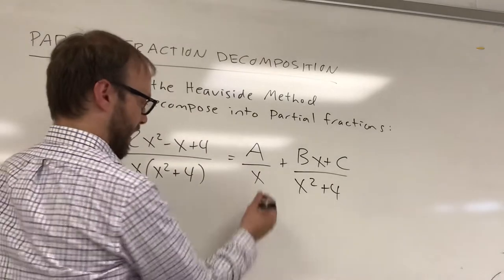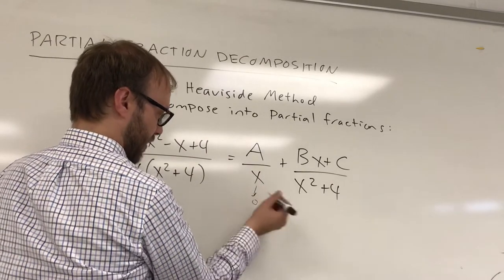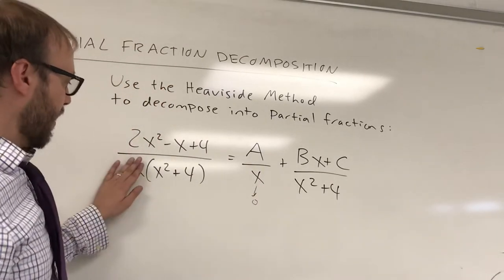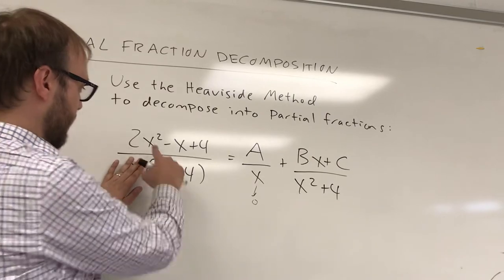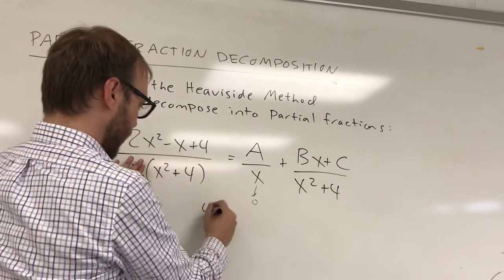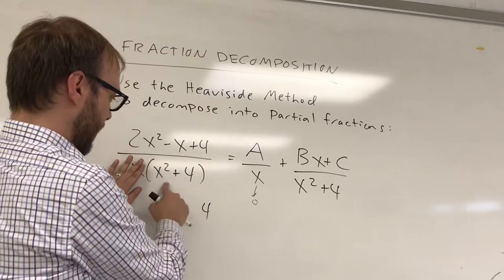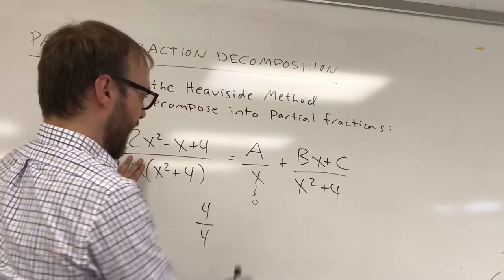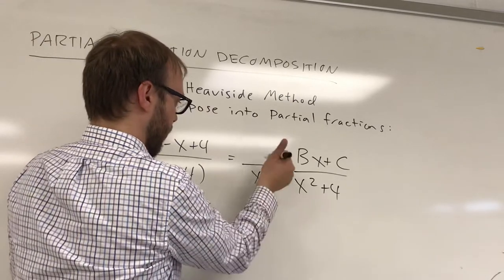So you can start out the same way. What makes the denominator zero? Well that's an x value of zero. Cover up the term that's going to make that zero. You can substitute zero in here, you get four in the numerator. You can substitute zero in here, you get four in the denominator, and that tells you that A is going to be equal to one.